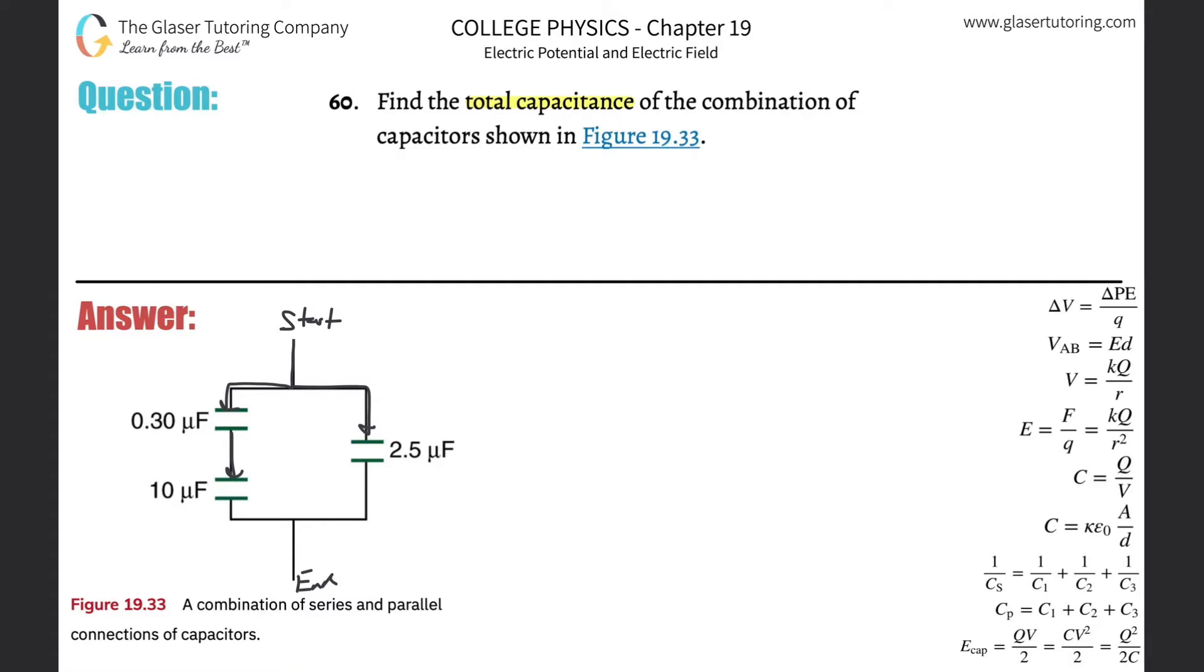Now I know the formula here for series: one over the total capacitance in series is going to be equal to one over the first capacitance plus one over the second, and however many other ones you had in series. Since I only have two, I'm going to stop there. So it's basically one over 0.3 microfarads. By the way, you can leave this in microfarads, just make sure that whatever units you have, they're all consistent.